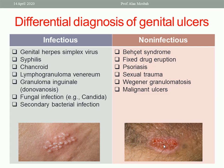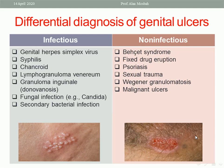The differential diagnosis includes infectious and non-infectious causes regarding genital ulcers. Infectious causes include syphilis, chancroid, and genital herpes simplex virus, which is the commonest ulcer in the vulva. Non-infectious causes include Behçet's syndrome, fixed drug eruption, psoriasis, sexual trauma, Wegener's granulomatosis, and malignant ulcers — whether basal cell carcinoma, squamous cell carcinoma, or malignant melanoma.